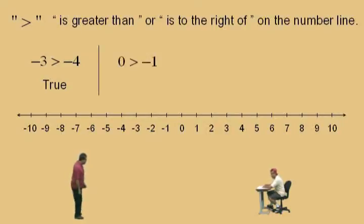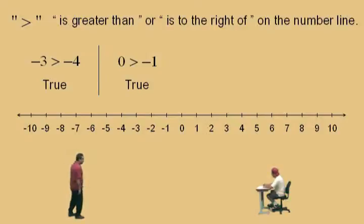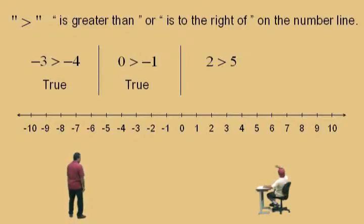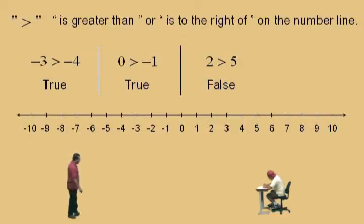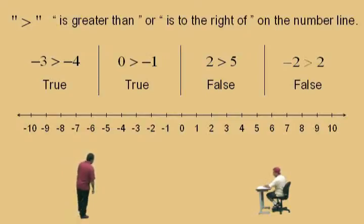Let's do another one. Here we go, Charlie. Is 0 greater than negative 1? Yes, it is, because 0 is to the right of negative 1. Zero is the bigger number. Let's do another one. 2 greater than 5 — is 2 greater than 5? No, it's not. So that statement, 2 greater than 5, is a false statement. It's not true. 2 is actually less than 5, we'll get to that in a second. Now here's one more: negative 2 greater than 2. Charlie, is negative 2 greater than 2? No, it's not. So that statement would be false.